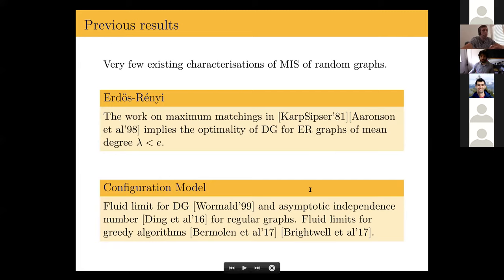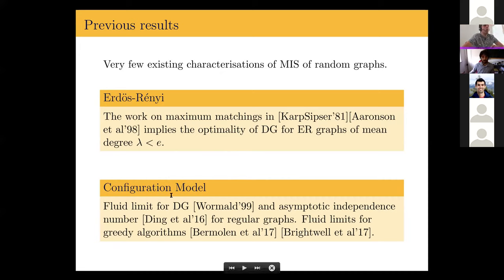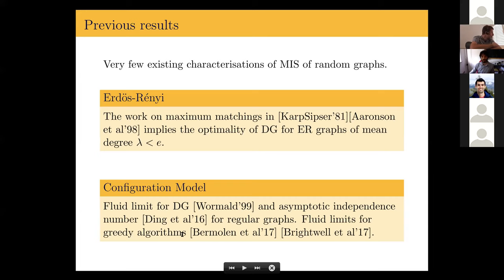There are very few characterizations of maximum independent sets in random graphs, and a couple are relevant for our work. One is that in sparse Erdős–Rényi graphs, when the mean degree is smaller than e, the degree greedy algorithm is optimal and constructs a maximum-size independent set. For configuration model graphs, there are results including fluid limits for the degree greedy on regular graphs, a result from Dean et al. characterizing maximum independent sets in regular graphs for large enough connectivity, and other work analyzing greedy algorithms via fluid limits.